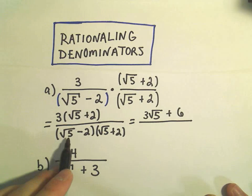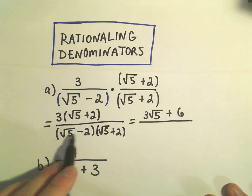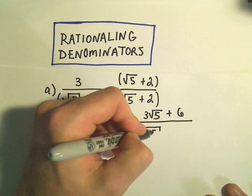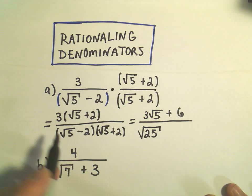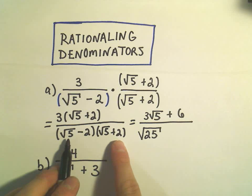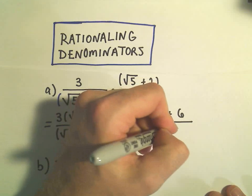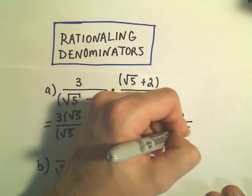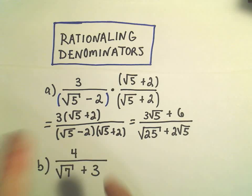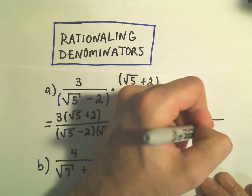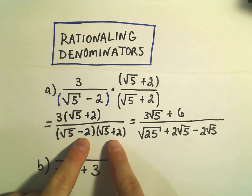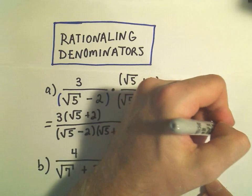And in the denominator, okay, we'll have square root of 5 times the square root of 5. Since they're both underneath the square root, we can multiply those two numbers together and get 25. Then I'm going to take the outer terms, so the square root of 5 times positive 2, that'll give me positive 2 root 5. On the inside, I have negative 2 times the square root of 5, so we'll simply get minus 2 root 5, and then we'll have a negative 2 times a positive 2, that'll give me negative 4.